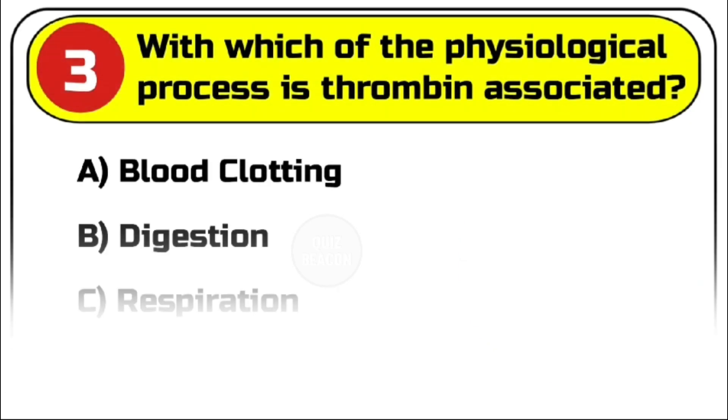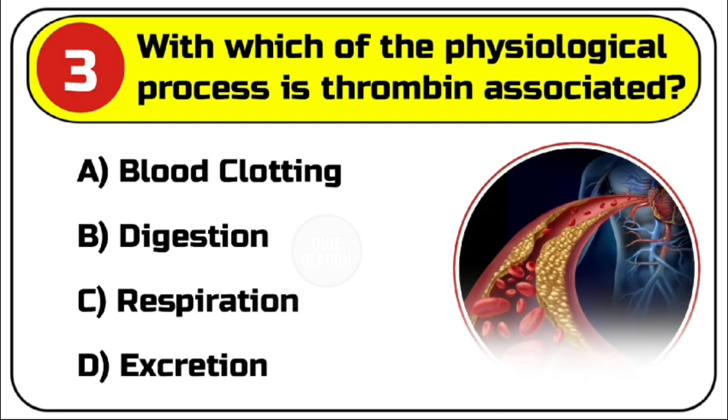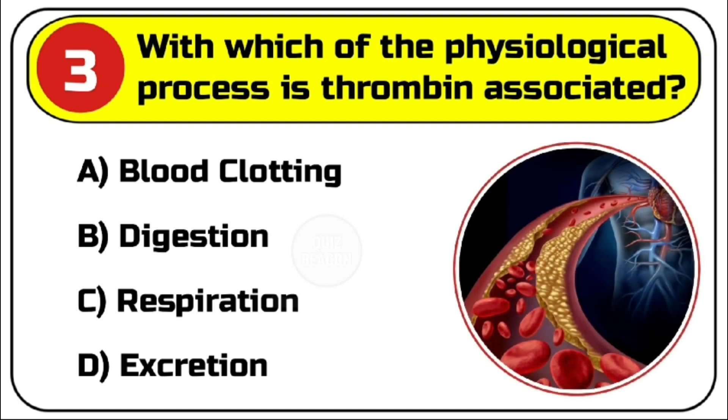Question number 3. With which of the physiological process is thrombin associated? Options are A. Blood clotting. B. Digestion. C. Respiration. D. Excretion.